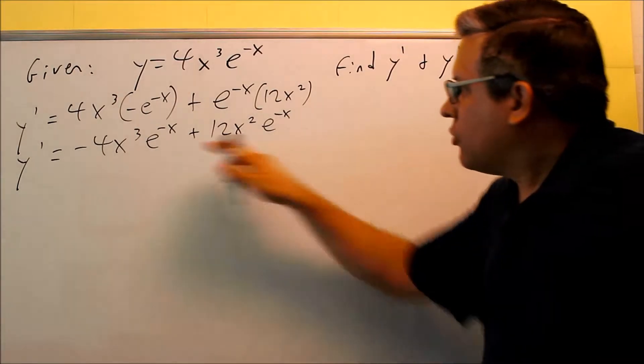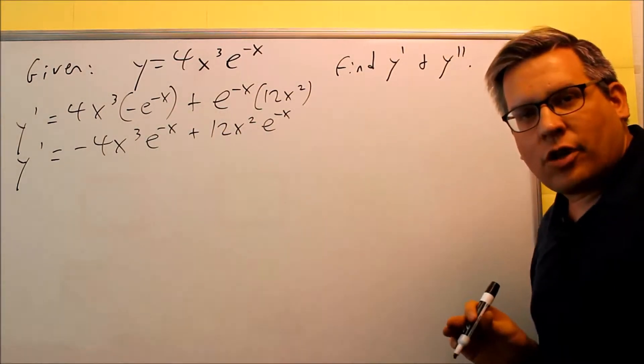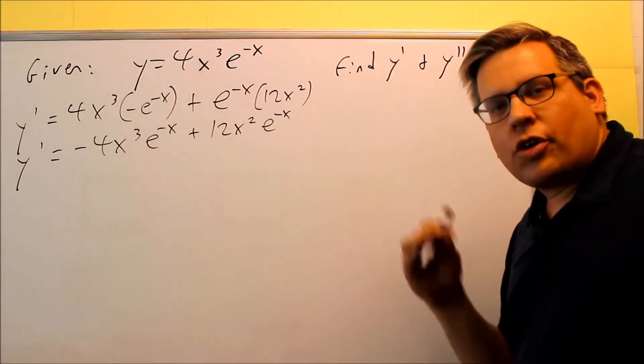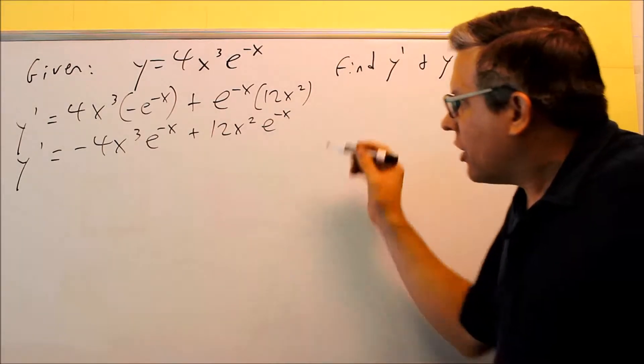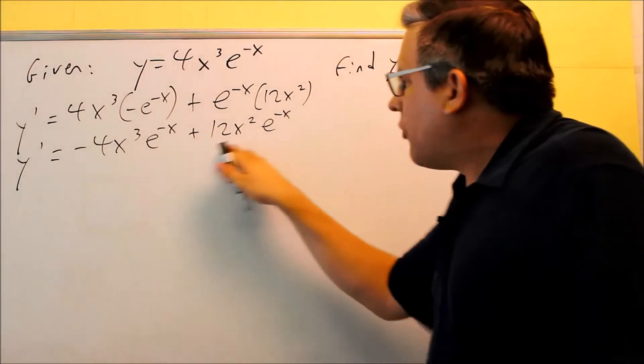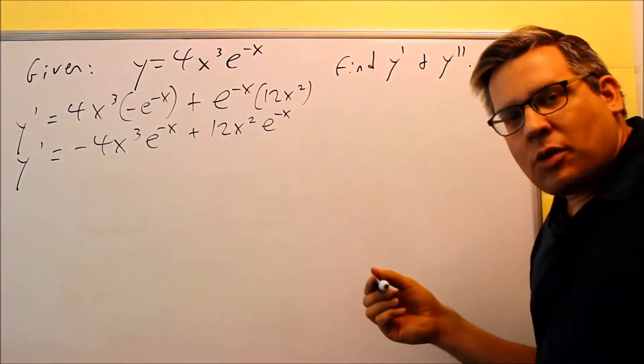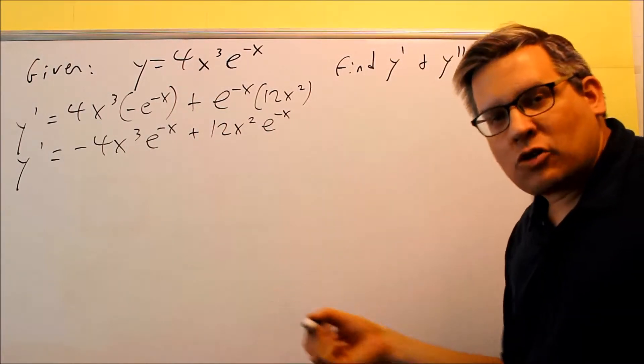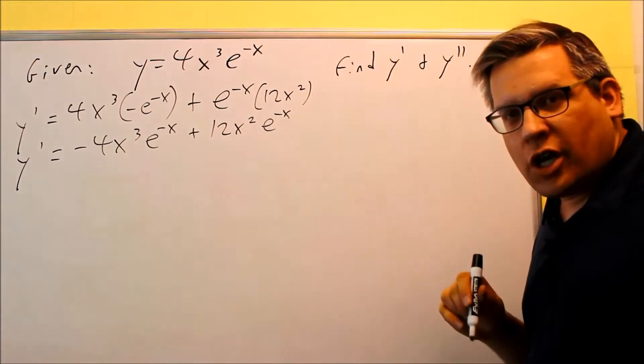Now later, I'll do some factoring to get it into a form where we can put it into the online homework system. But I don't want to do that right now, because when I do the second derivative, I'm just going to do it off of this. Because if I factor it, it's going to make it more complicated, it'll actually be three things multiplying together. So we'll just work with this one now.